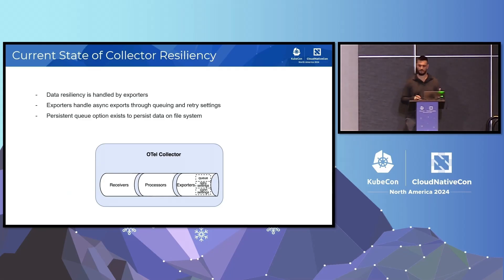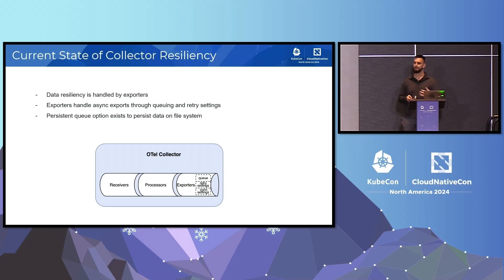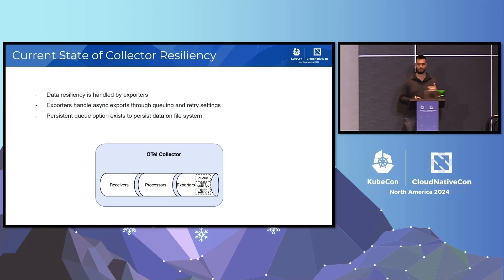To talk about the current state of resiliency within the collector, especially when it comes to permanent downstream failures: data resiliency is exclusively handled by exporters. Exporters are fully responsible for ensuring that our data successfully makes it to its target destination. And exporters tend to have some out-of-the-box features that do benefit resiliency, like retry settings, memory queue, and optional persistent queue. But all of those are more geared towards retry or temporary errors, like rate limits or timeouts.